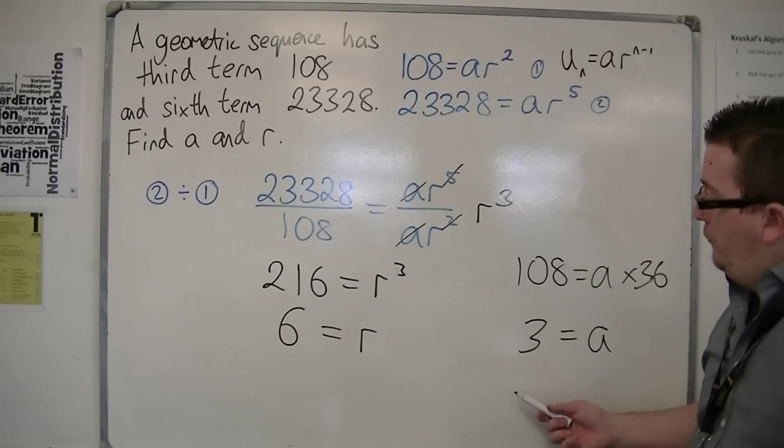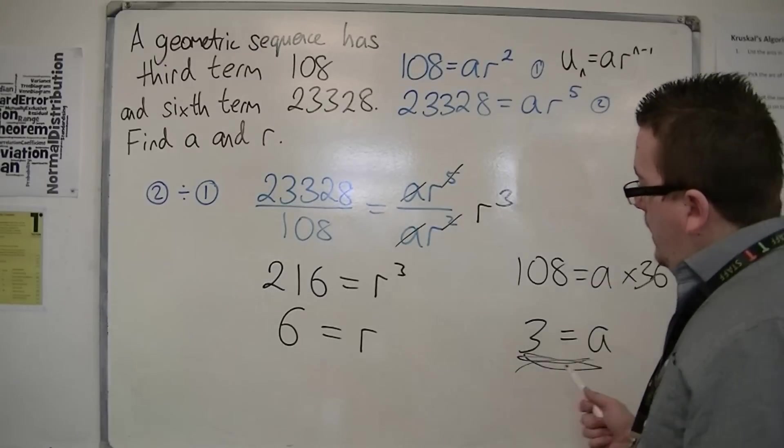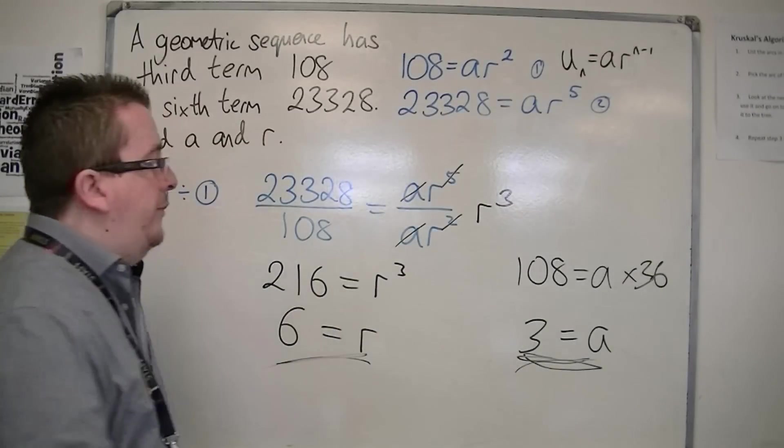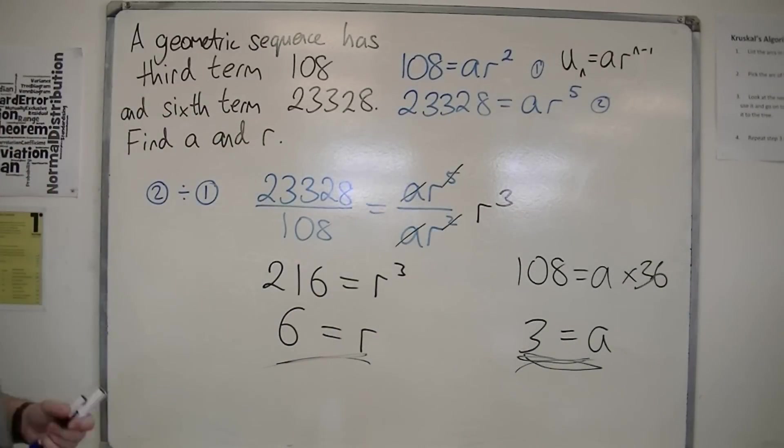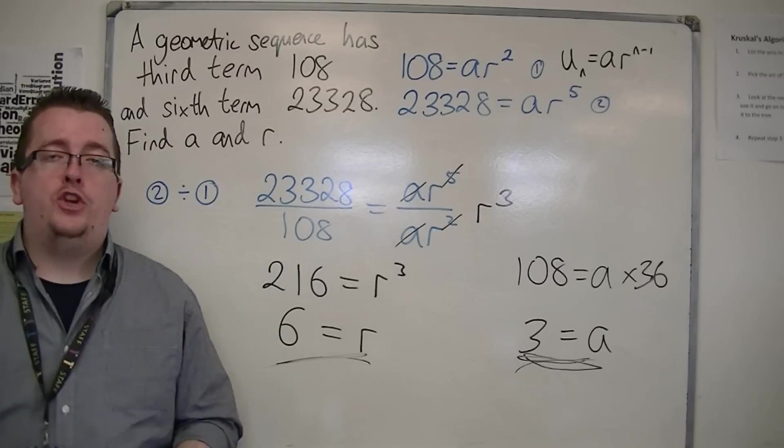Divide both sides by 36, so A must be 3. So we've got our first term, 3, and we've got our common ratio, 6. And that's how we can work out what A and R would be given that initial information.